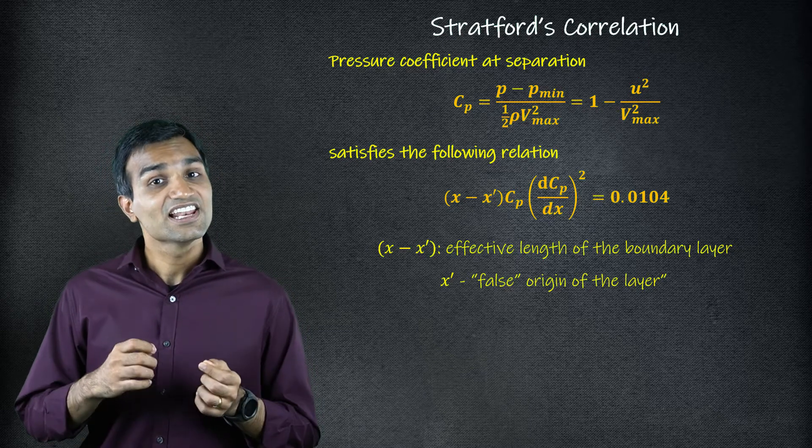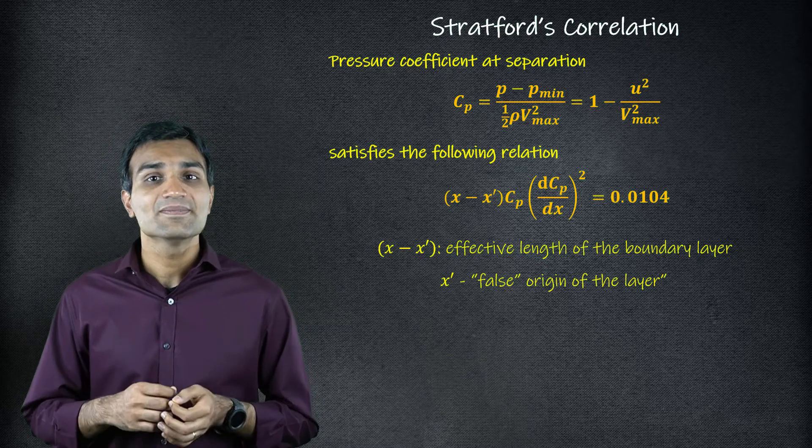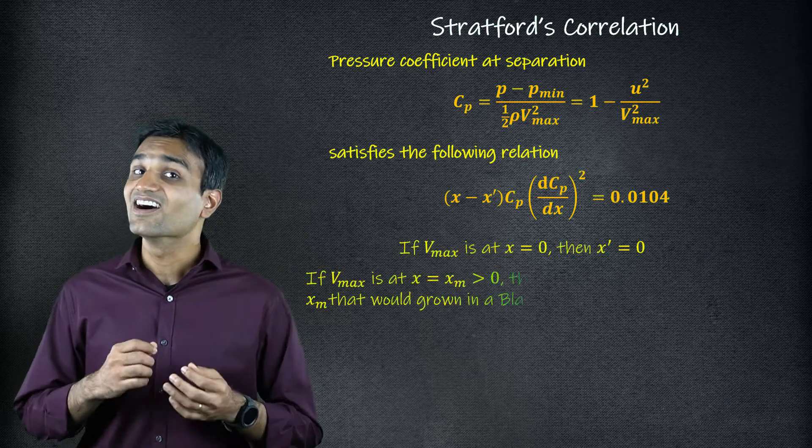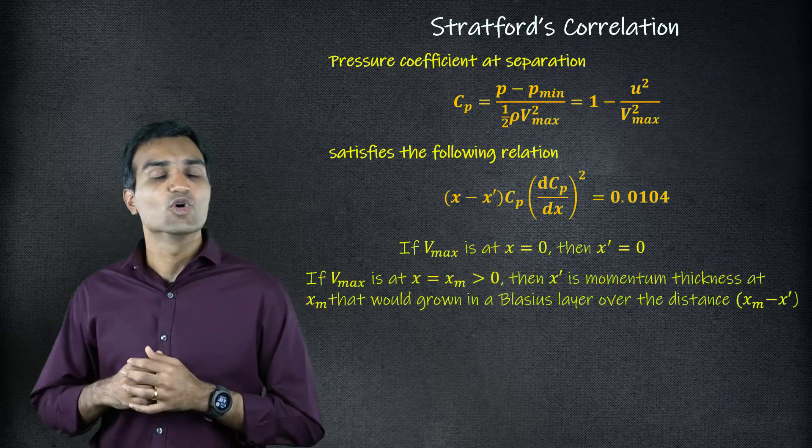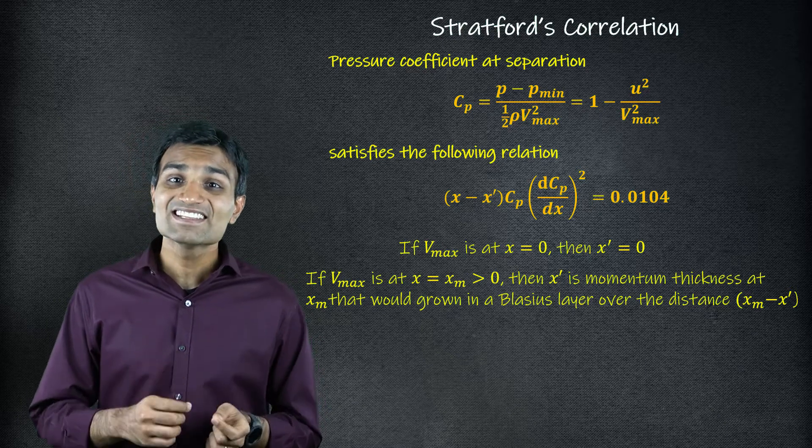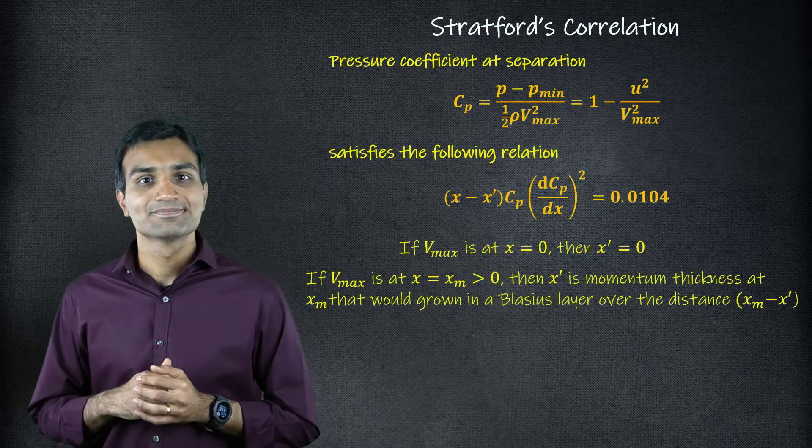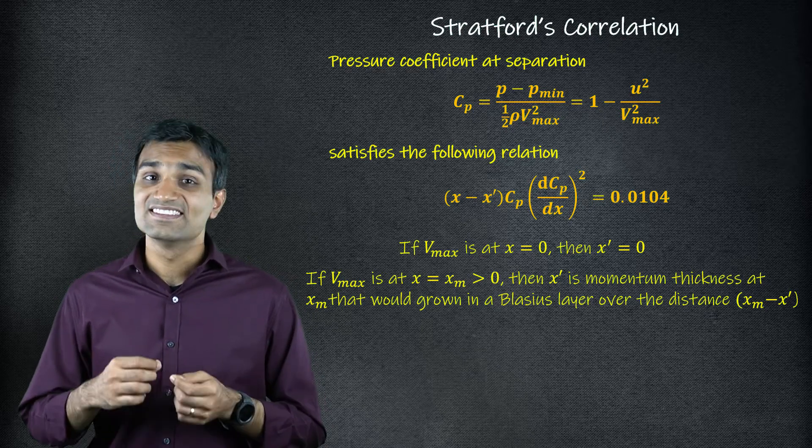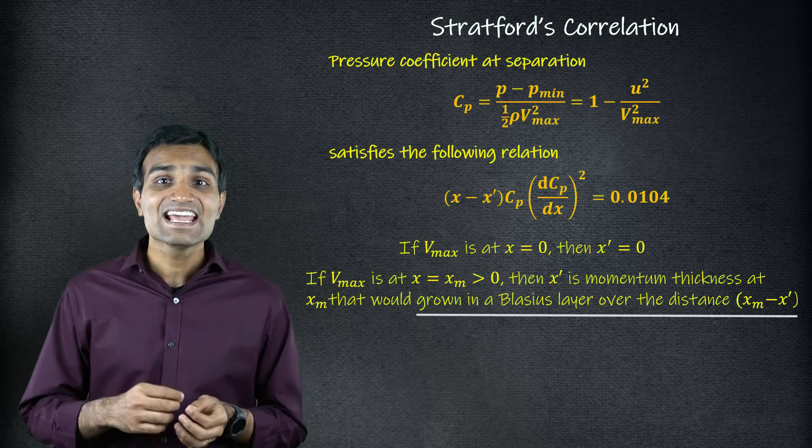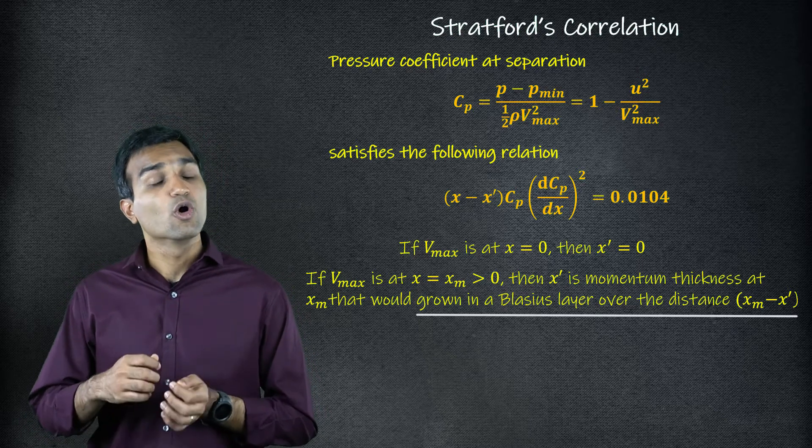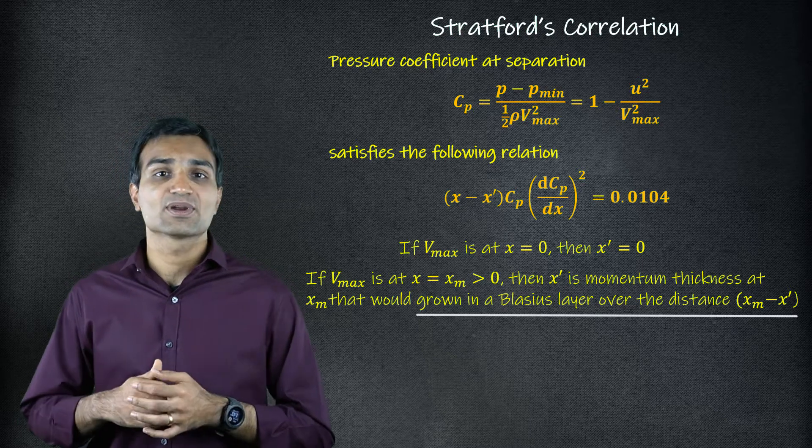In this relationship, x-prime is equal to zero if vmax occurs at x equal to zero. If the maximum velocity occurs at a point m downstream, then x-prime is the momentum thickness at xm based on the Blasius solution over xm minus x-prime.